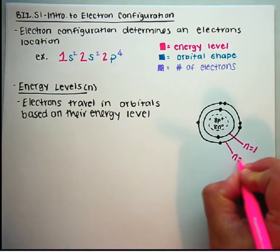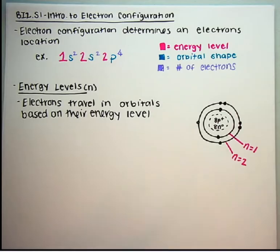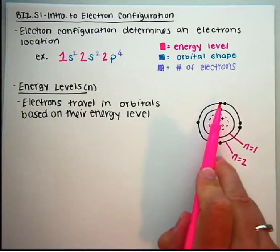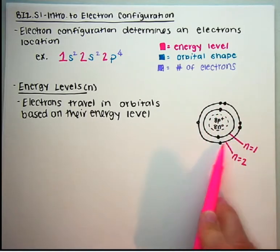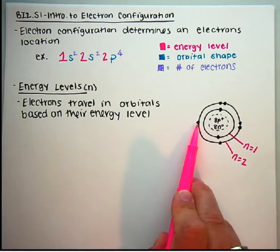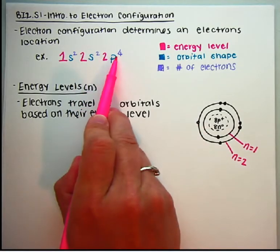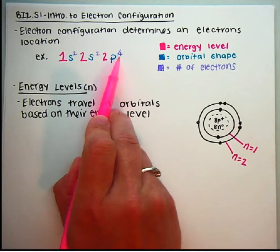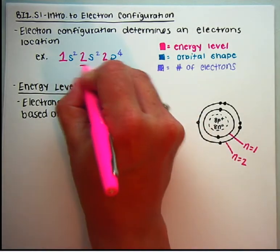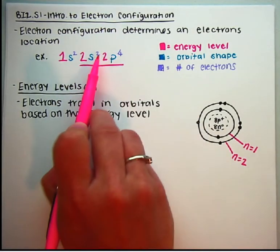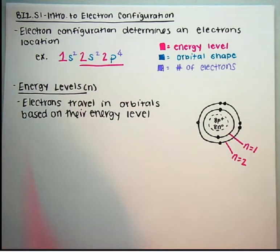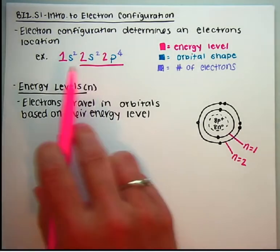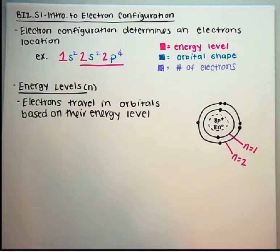In the second energy level, I have a total of 6 electrons — 2 electrons in an S orbital and 4 electrons in a P orbital, giving 2s2 and 2p4. So our electron configuration goes right along with what we know about Bohr diagrams.